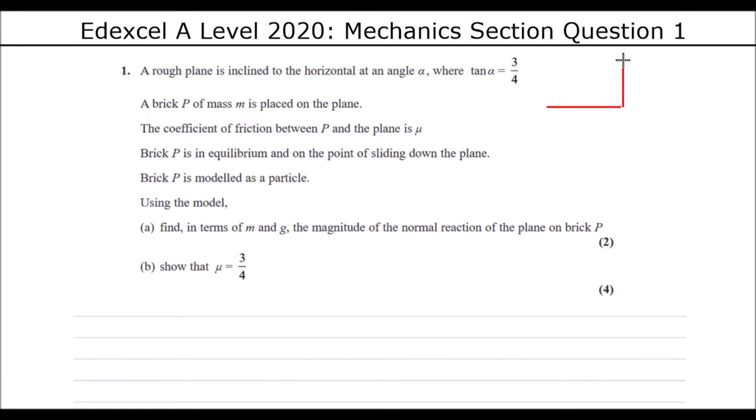So if we draw a right angle triangle with an angle alpha in it, tan alpha, tan is the opposite divided by the adjacent. So the opposite is 3, and the adjacent is 4. Opposite over adjacent.